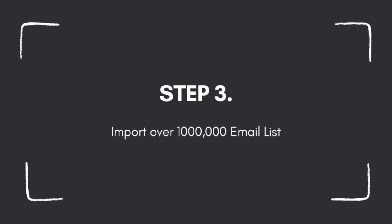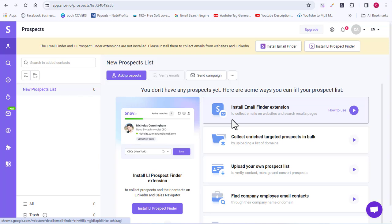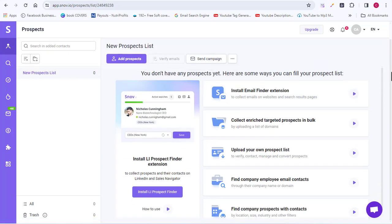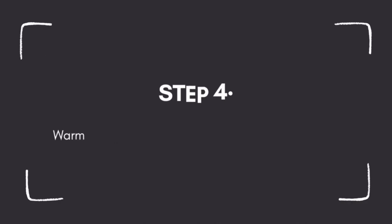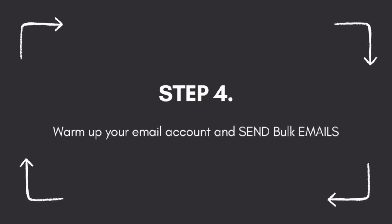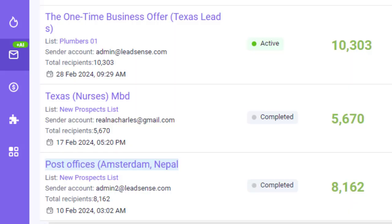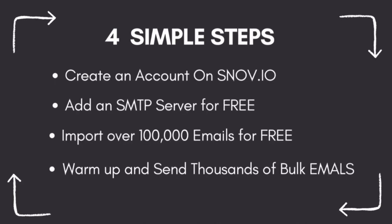For step three, I will show you how to import your email list. I'm going to walk you through how you can import your email list, verify it, and bring all those emails into snov.io so you can start sending your bulk emails. And finally, I'm going to teach you how to warm up your email account for a better inbox rate so that you can start sending out thousands of emails every single day. All four steps in combination will guarantee you sending over 10,000 emails every single day using snov.io.